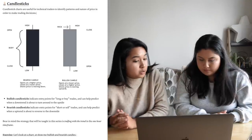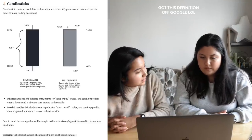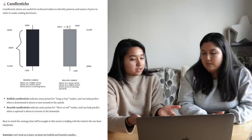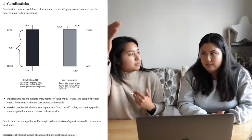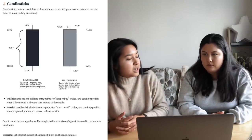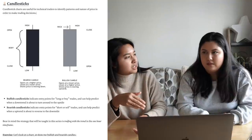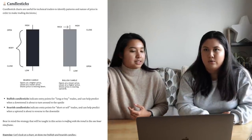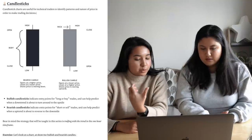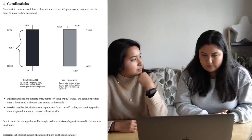Bullish candles indicate entry points for a long or buy trade, and can help predict when a downtrend is about to turn around to the upside. When you have your pairs, you're either going to buy or sell, also called long or short. If you're long on a position, it means you're buying. If you're short on a position, it means you're selling. Bearish candles indicate entry points for short or sell trades and can help predict when an uptrend is about to reverse to the downside.